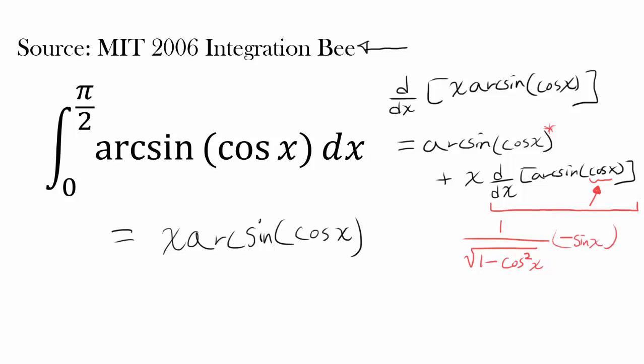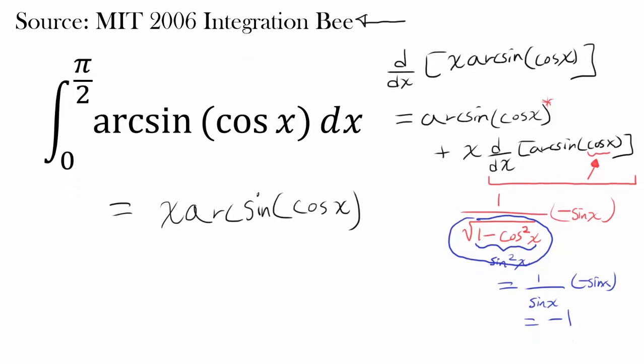We have something very interesting going on. 1 minus cos²x is the same thing as sin²x, so taking the square root gets you sin x. So this entire expression is 1 over sin x times negative sin x, or just negative 1. So we have something very interesting and helpful that happened. When you differentiate it, you get arcsin(cos x) plus x times minus 1, or just minus x.